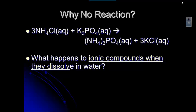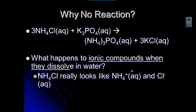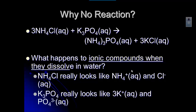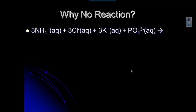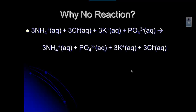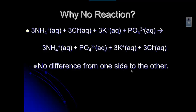Think about what happens to ionic compounds when they dissolve in water. We talked about it when we originally covered ionic compounds. Remember that ionic compounds split into their ions when they dissolve into water. So ammonium chloride really becomes ammonium ions and chloride ions, and potassium phosphate really becomes three potassium ions and one phosphate ion. When we write that equation with the ions split out, you can see that on the left-hand side and on the right-hand side, everything looks the same.